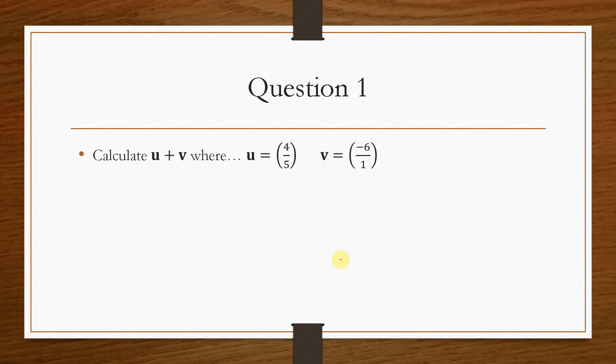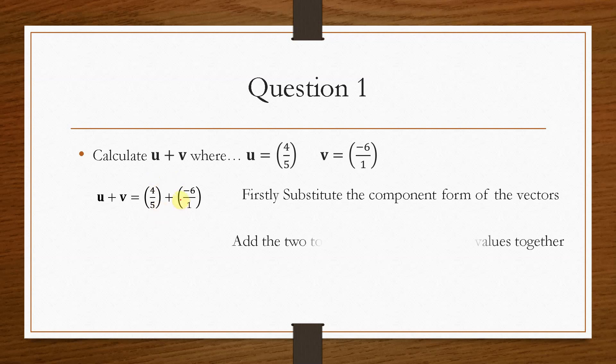If we take an example here, it asks us to calculate u plus v, where it gives us the vectors u and v. We first substitute them in, so we have 4 over 5 plus minus 6 over 1, and then we add the two top values and the two bottom values. So u plus v will give us minus 2 over 6, because 4 plus minus 6 is minus 2, and 5 plus 1 is 6. And that is essentially how you would add and subtract two-dimensional vectors.